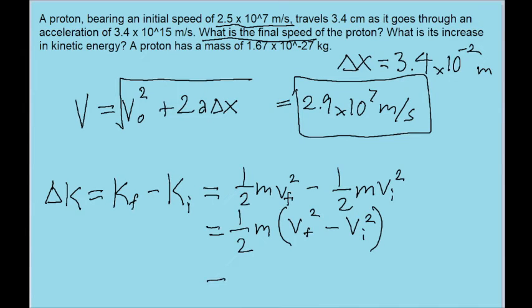So if we plug all of this into our calculator, then we find an energy change of about 1.9 times 10 to the power of negative 13 joules. And that is our answer to the second part of the problem.